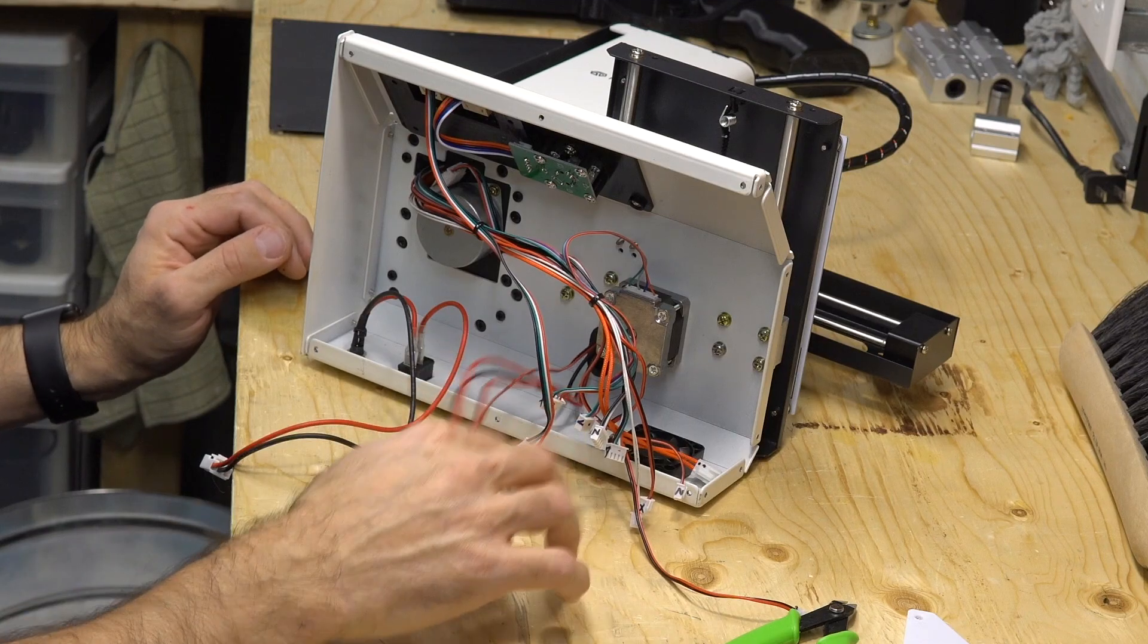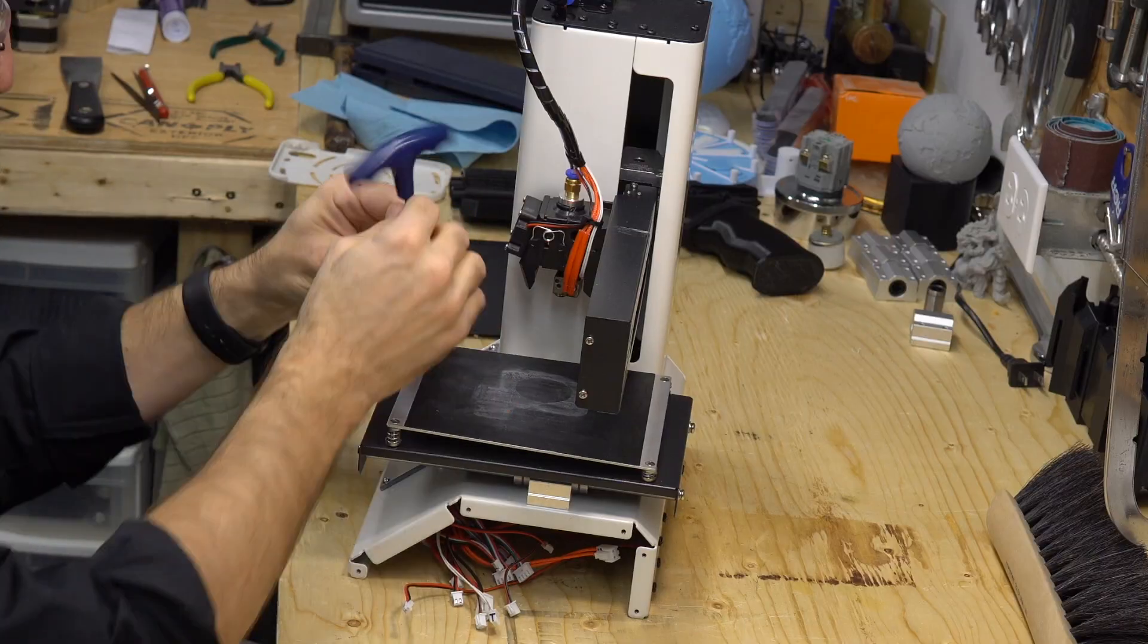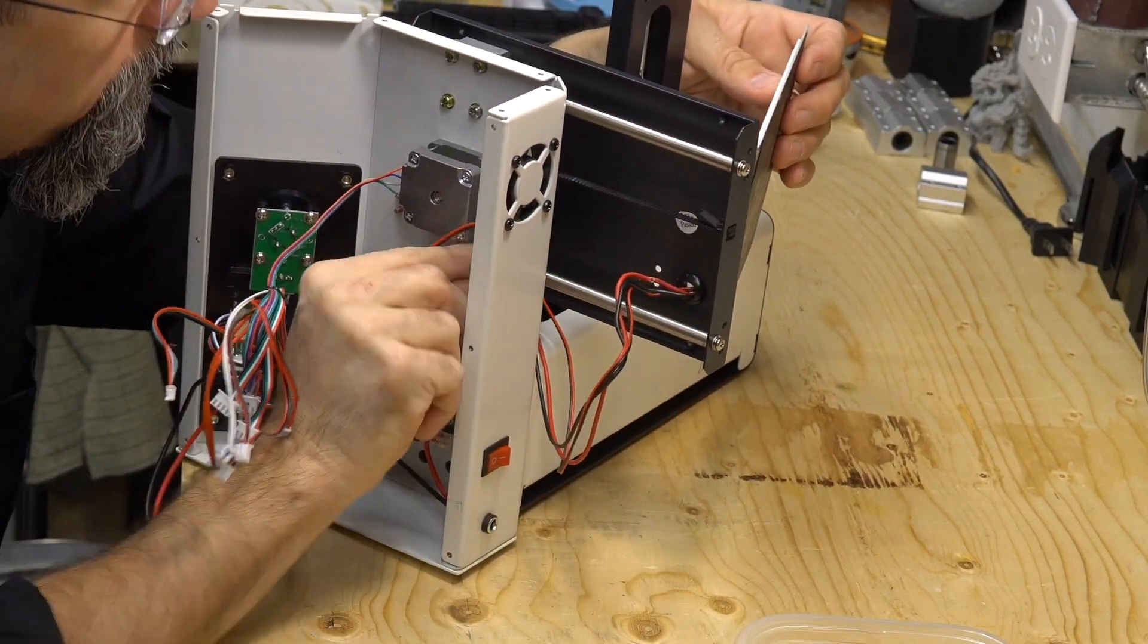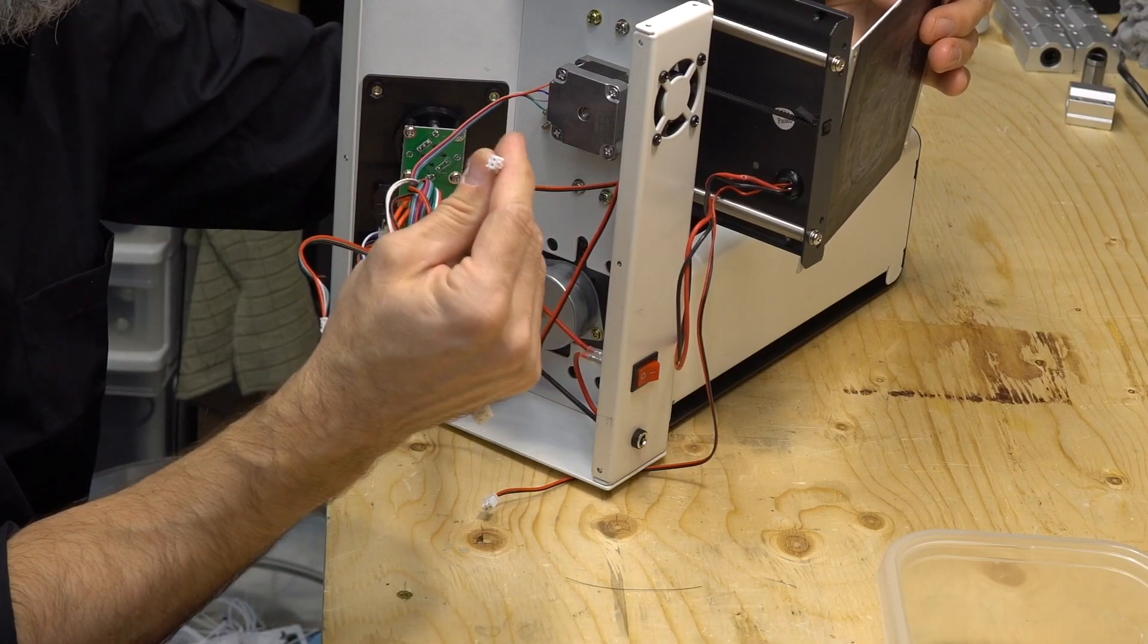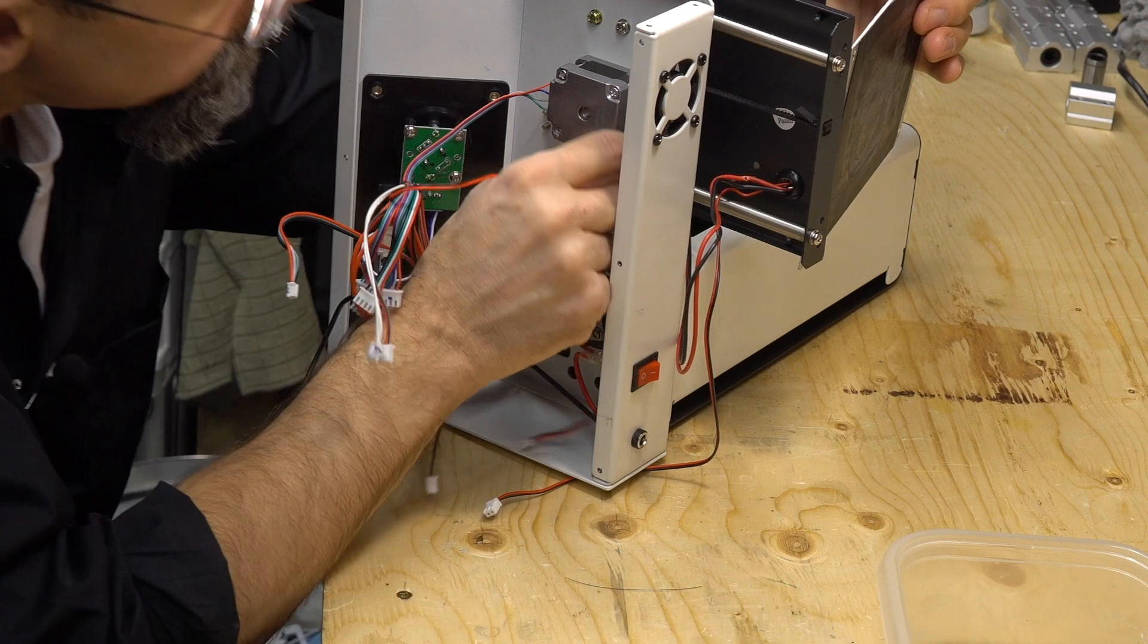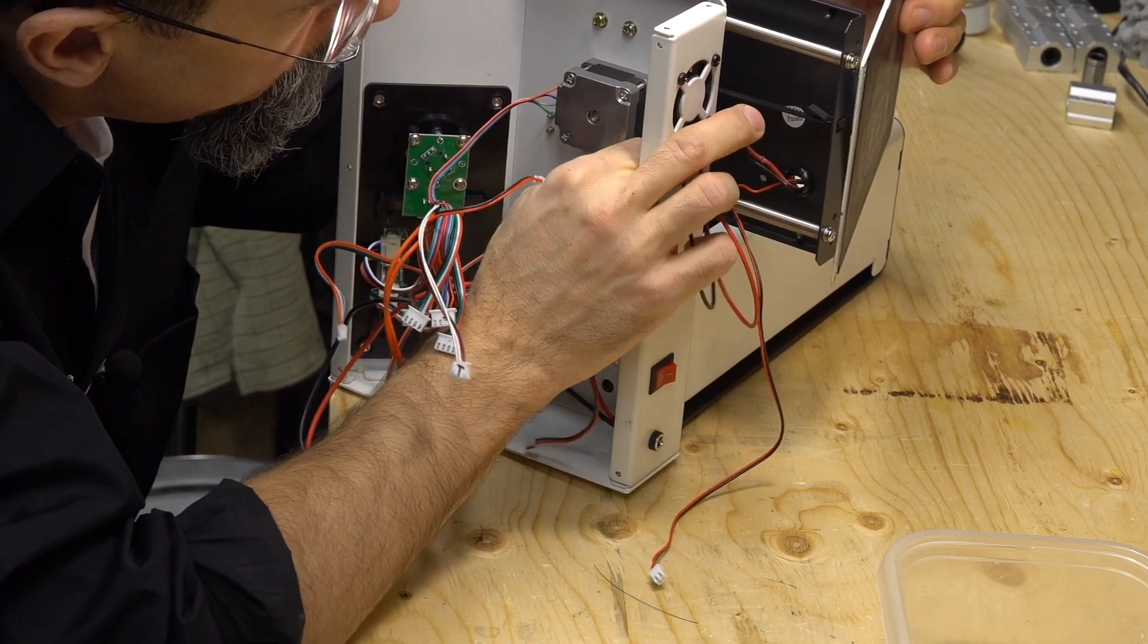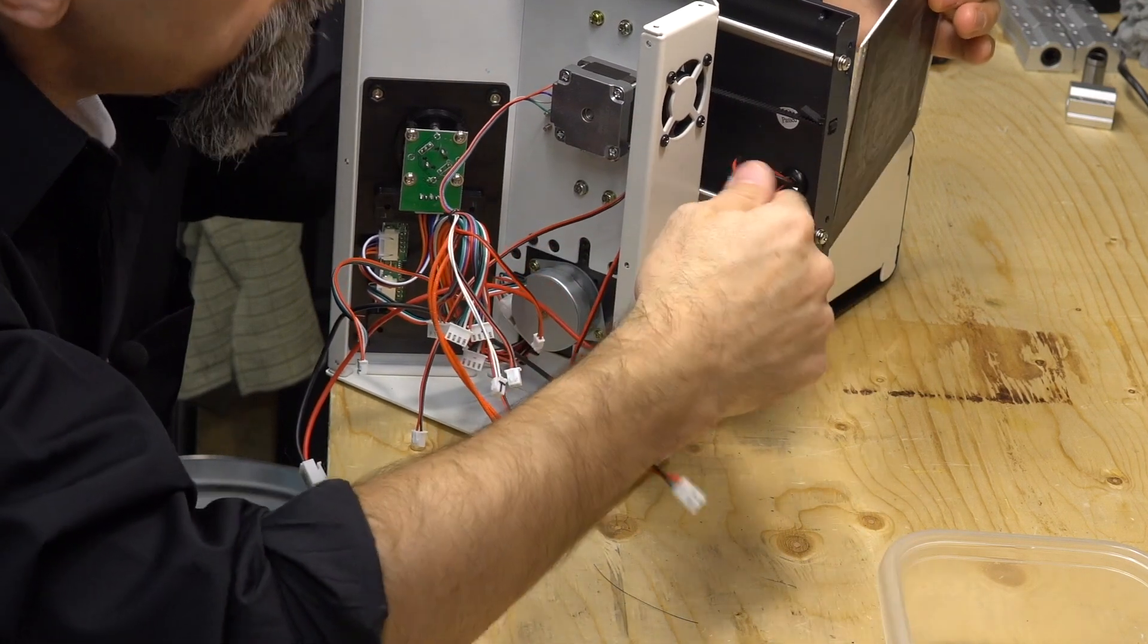So those are the cables we need. Let's undo the bed. Okay, this one is the switch for the y-axis, the limit switch for the y-axis that doesn't move, so that doesn't go away. That doesn't need any new cables. Yeah, that's it. Okay, here we go.